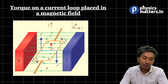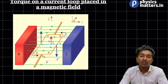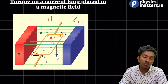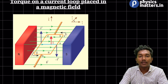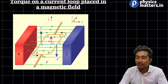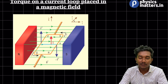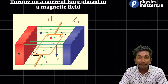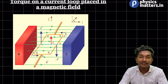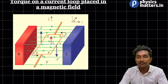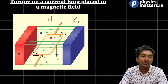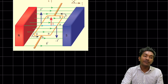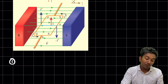PQ, QR, RS, and SP are all individual conductors. When they are placed inside a magnetic field, there is a chance that a force will be acting on each of these conductors. Let's deal with how much force is acting on each one. Number one: let's consider conductor PQ.